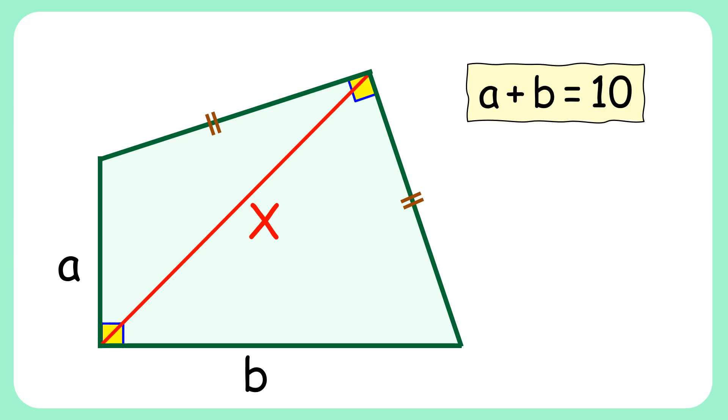In this interesting question, given is a quadrilateral with two angles of 90 degrees each. Two adjacent sides are equal in length and the sum of the other two adjacent sides is 10 centimeters. Using this data, we have to find the length of the diagonal or value of x.